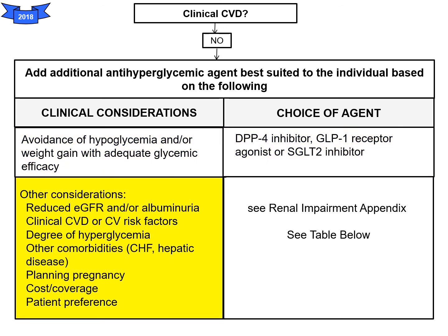Other considerations include reduction in GFR, the degree of hyperglycemia, and other comorbidities. If patients have renal impairment, the subsequent table will show how to adjust medications appropriately.